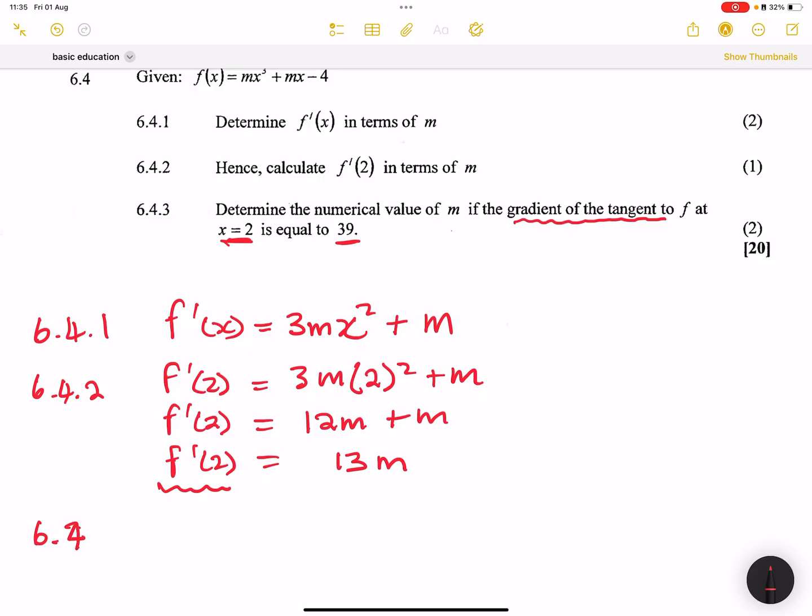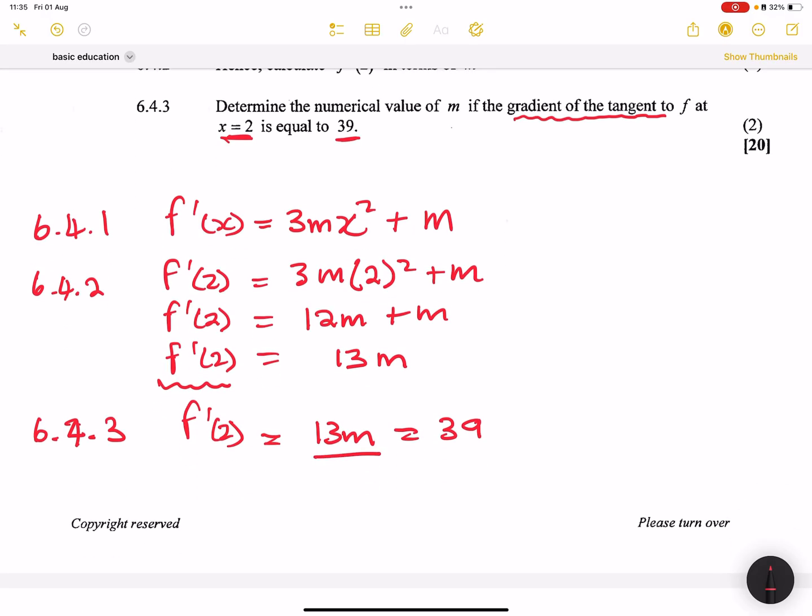So all we need to do is say well, f'(2), the derivative at x equals 2, which is 13m, is equal to 39. And so if we divide both sides by 13, m would simply be equal to 3.